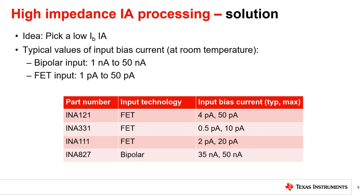The easiest solution to this high output impedance IA processing issue is to find an instrumentation amplifier with low input bias current. FET input IAs typically have lower input bias currents than bipolar input IAs. Texas Instruments has a wide portfolio of low input bias current IAs. Although FET input IAs typically have lower IB, TI's new generation of bipolar input amplifiers are built on a precision complementary bipolar semiconductor technology that incorporates what's called super-beta bipolar transistors.